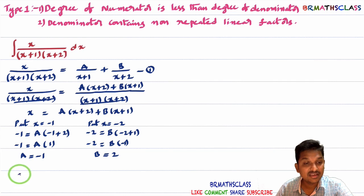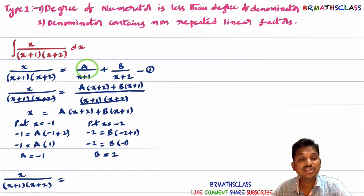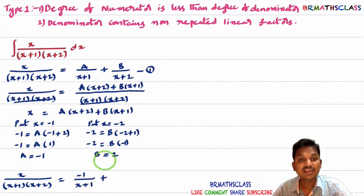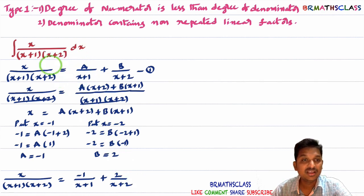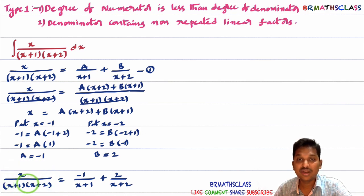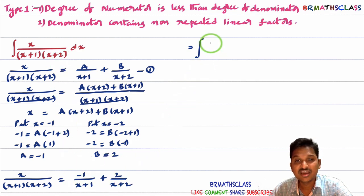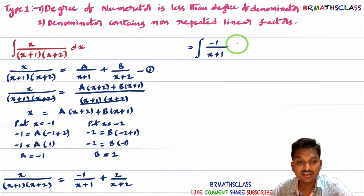Now I substitute the values A = -1 and B = 2 back into equation 1. So x divided by (x+1)(x+2) can be written as -1/(x+1) + 2/(x+2). This is the partial fraction decomposition. If you simplify this expression, you will get the original rational function back.